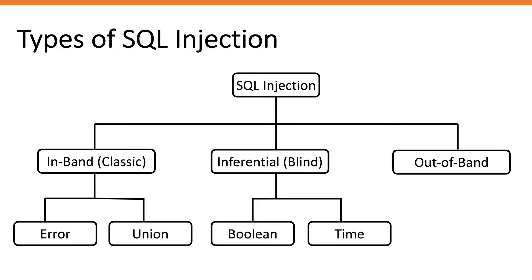For union-based SQL injection, it's a technique that leverages the UNION operator to combine the results of two queries into a single result set. You don't just output the result of the original query the application makes — you also output the result of a query of your choosing, such as the usernames and passwords of users. You would use the UNION operator to output the credentials from the application's users.